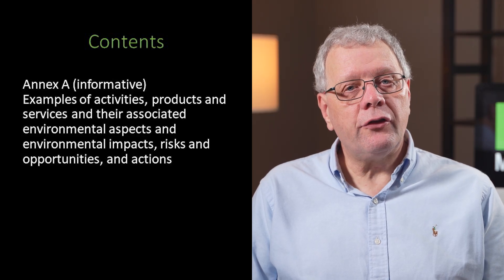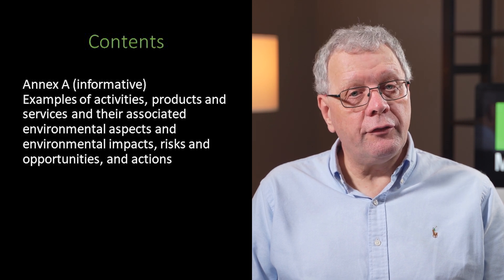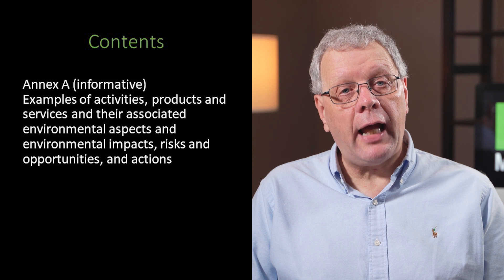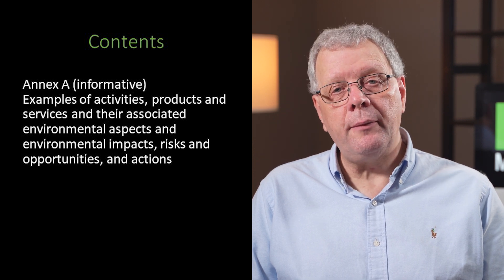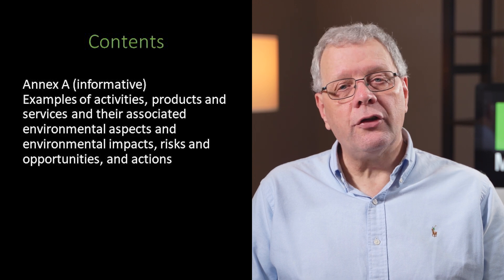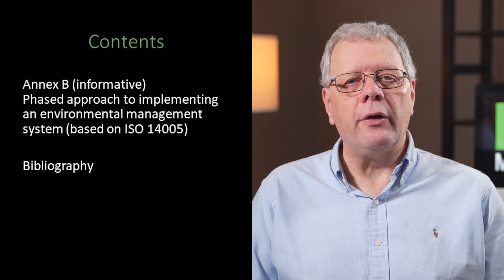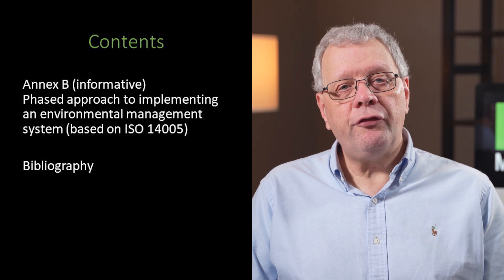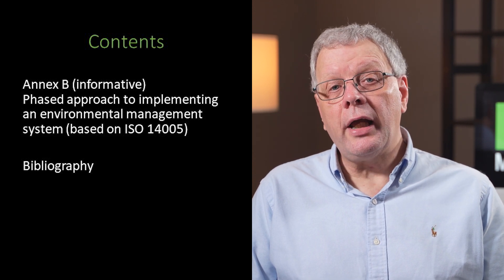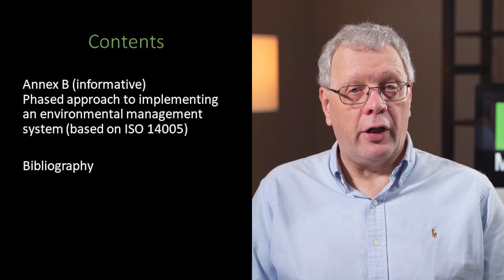There are two annexes. Annex A, which is informative, contains examples of activities, products and services and their associated environmental aspects and environmental impacts, risks and opportunities, and actions that can be taken. Annex B is also informative and covers a phased approach to implementing an environmental management system based on ISO 14005.